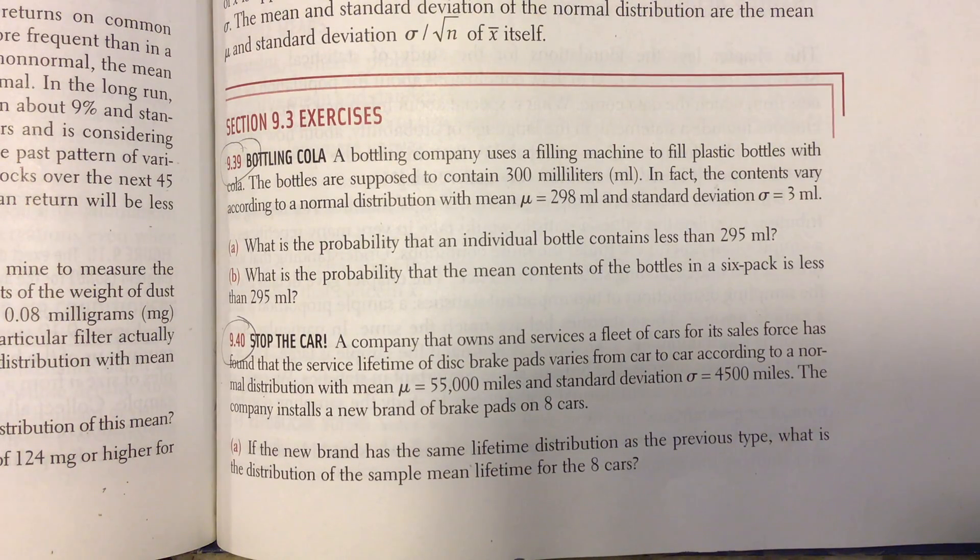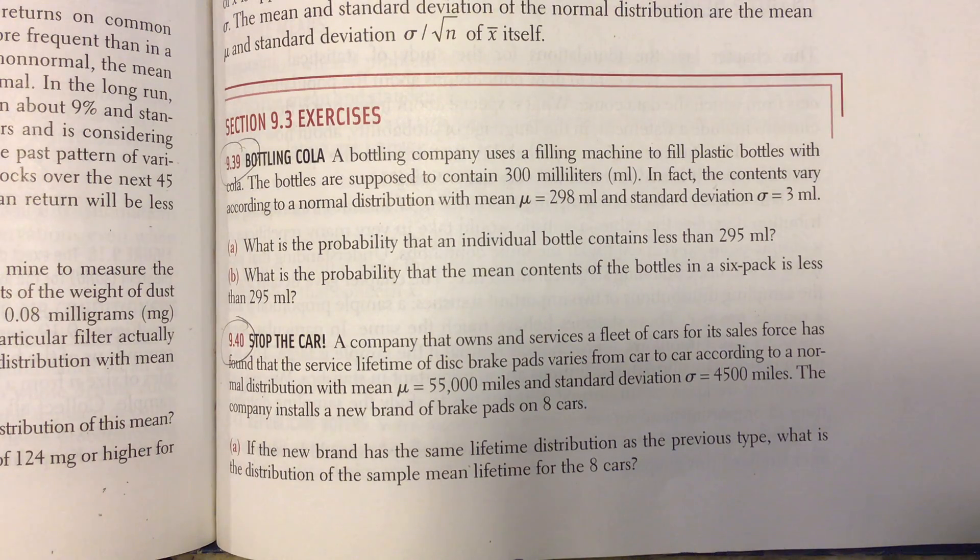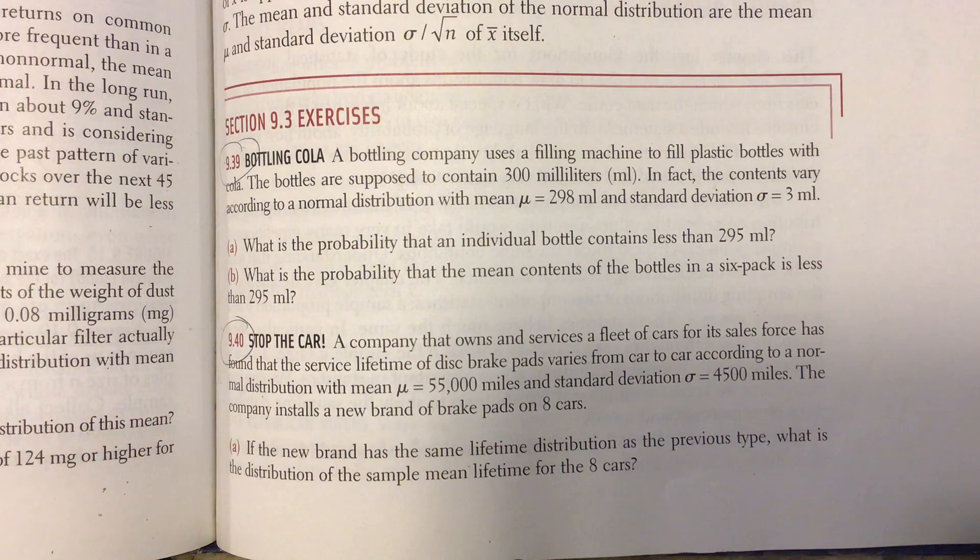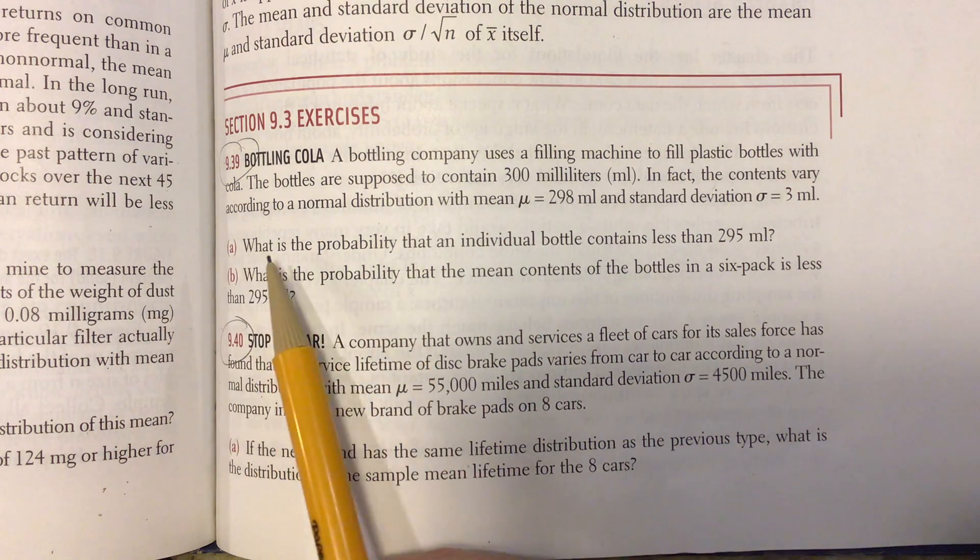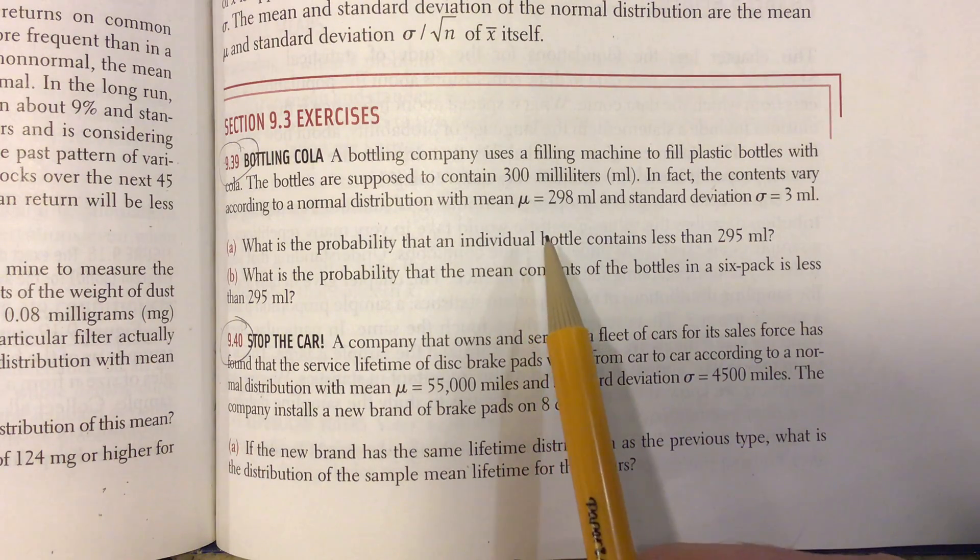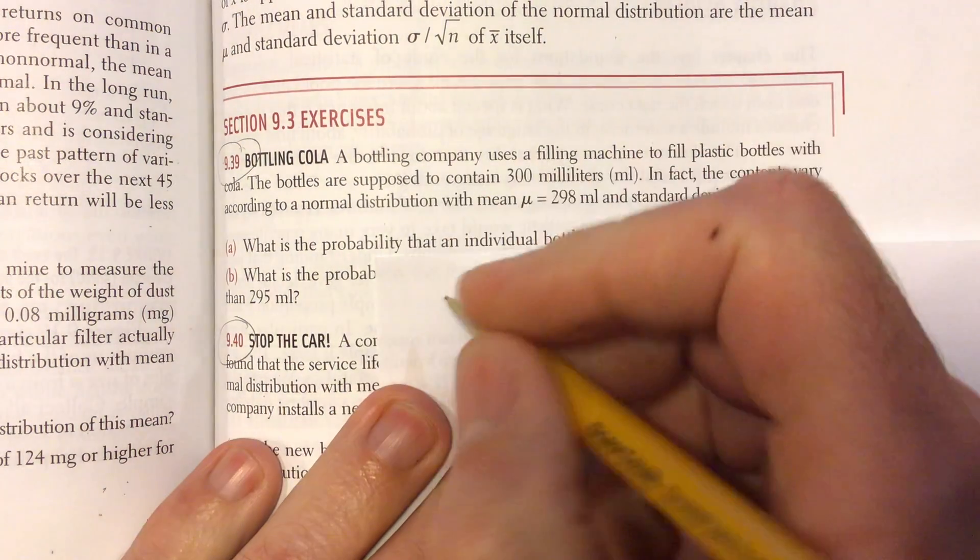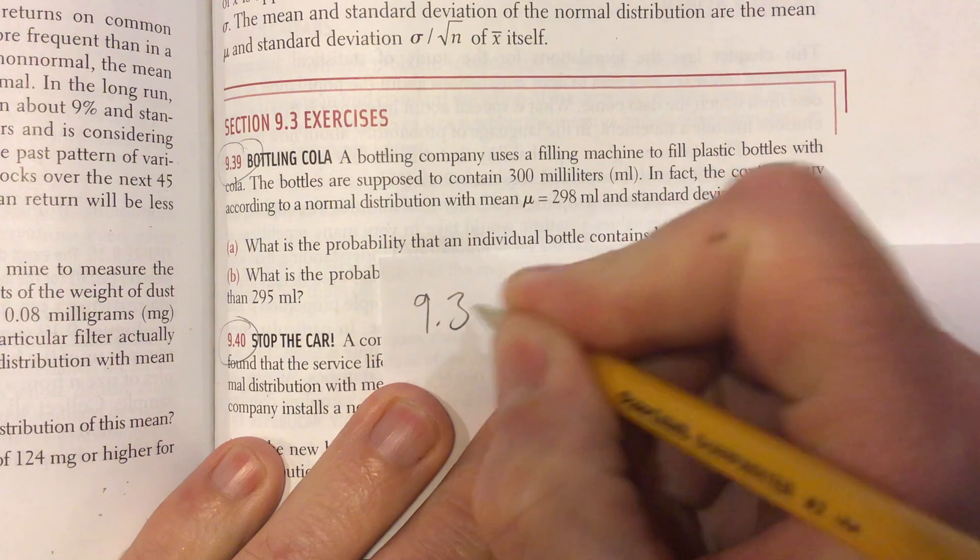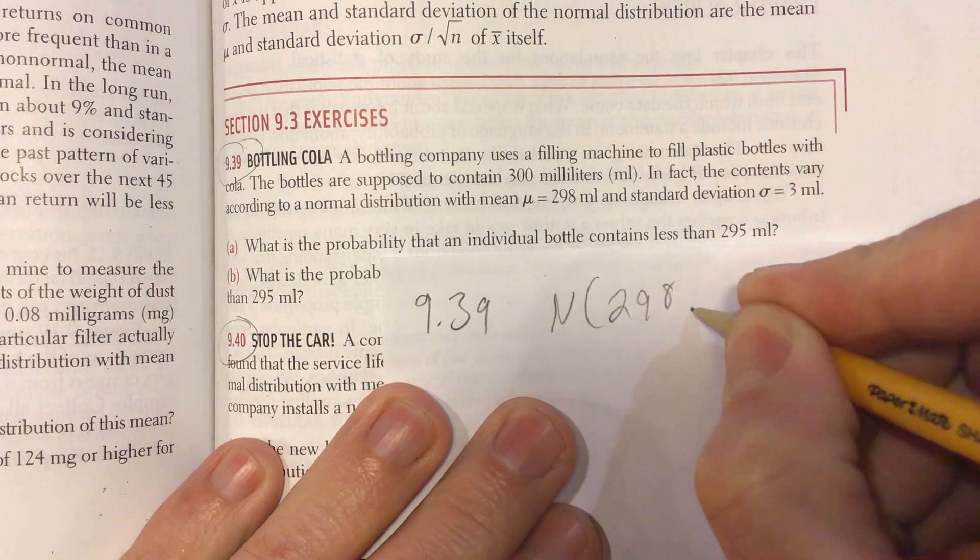You can start here with bottling cola. A bottling company uses filling machines to fill their bottles. They're supposed to contain 300 milliliters, but the contents vary according to a normal distribution with a mean of 298 and a standard deviation of 3. So I'm going to put that info down: Normal (298, 3).